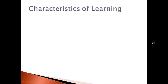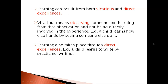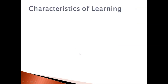Learning can result from both vicarious and direct experience. Vicarious learning means observing someone and learning from that observation without being directly involved. For example, a child learns how to clap hands by seeing someone else do it. Learning also takes place through direct experience — for example, someone learns to write by practicing writing.